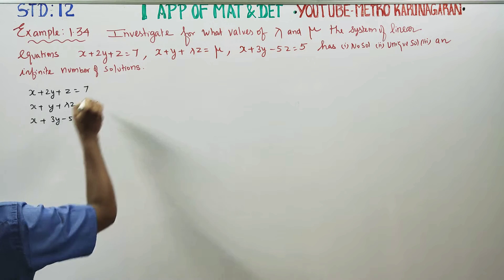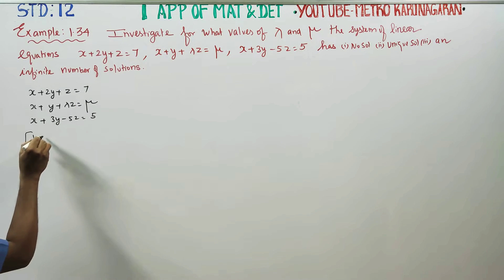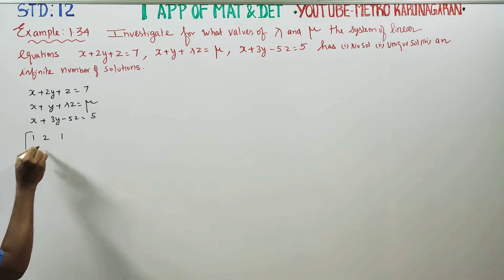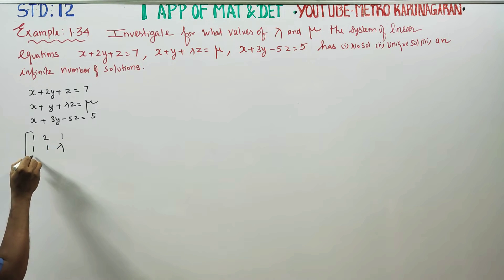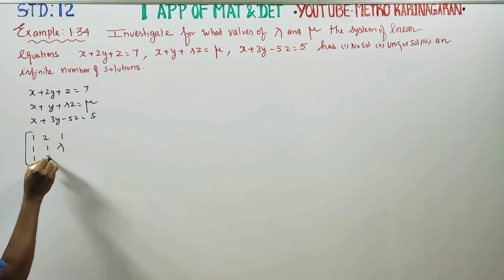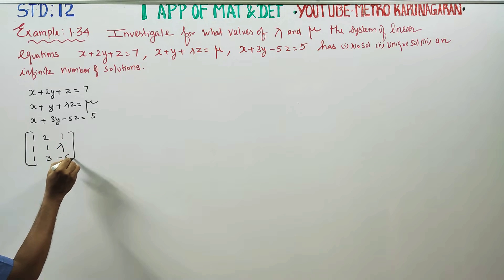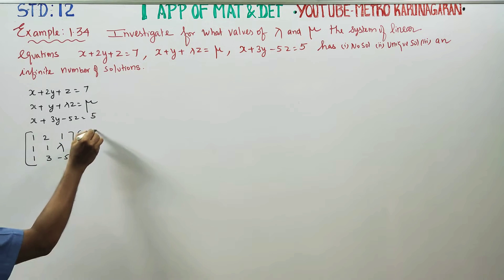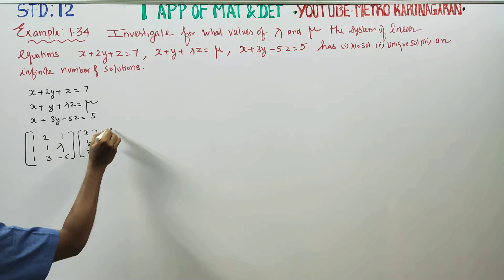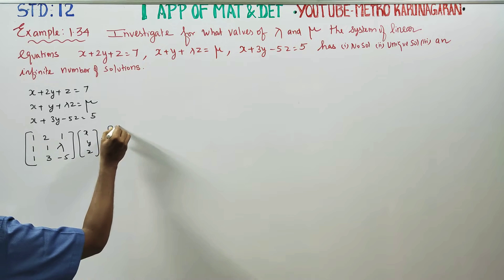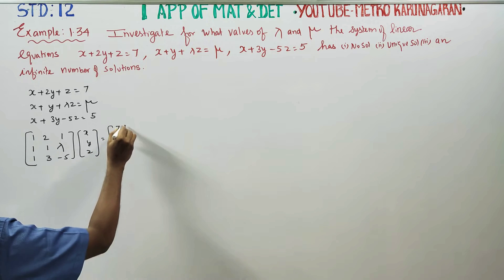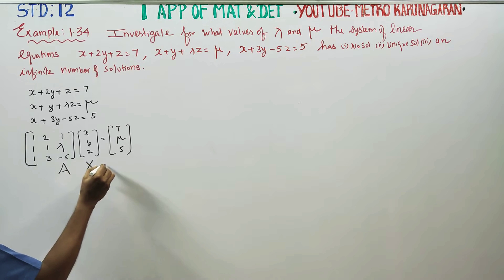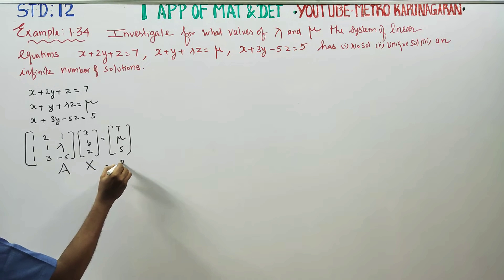First, this is a matrix style. The coefficient matrix is 1, 2, 1 in the first row; 1, 1, lambda in the second row; 1, 3, minus 5 in the third row. The variable matrix x, y, z is equal to 7, mu, and 5. This is matrix A, this is matrix x, this is matrix b.